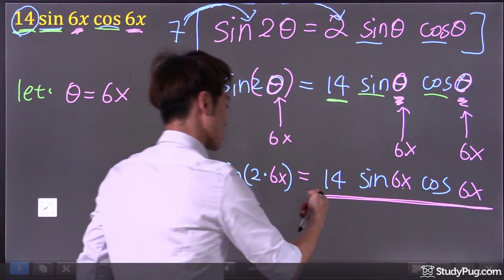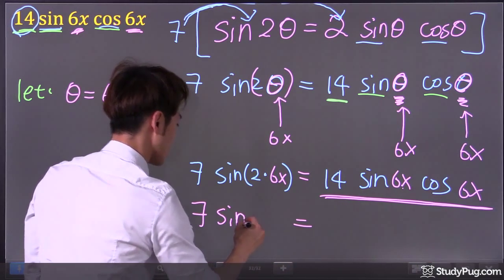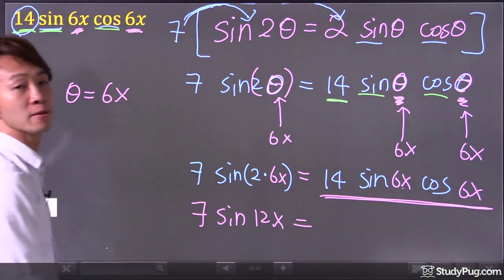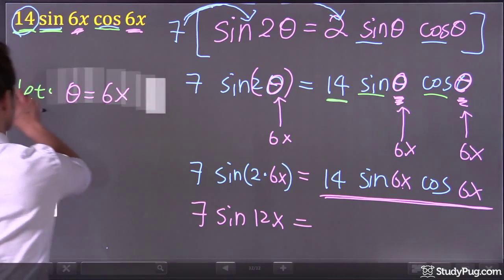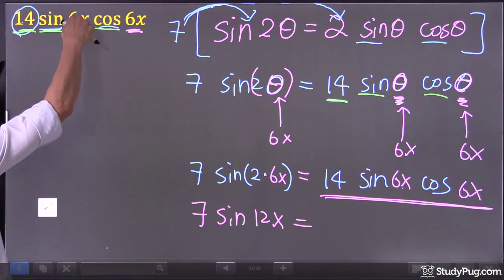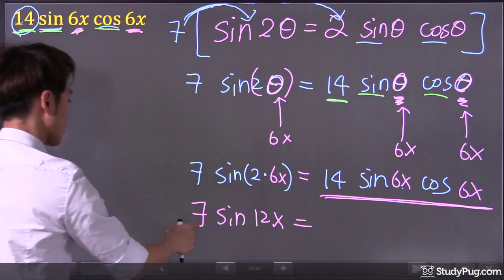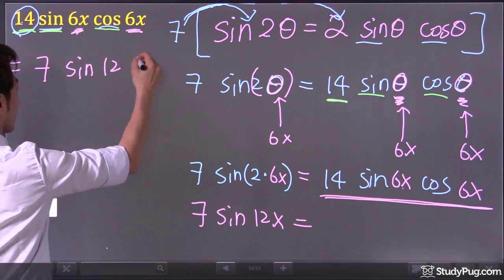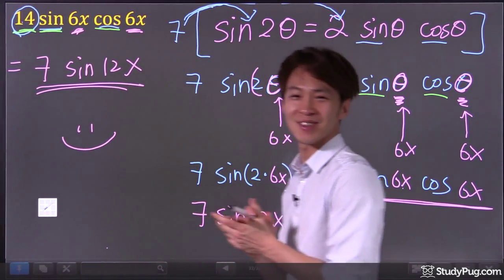Guess what? So this thing actually equals what? Equals 7 sine, because 2 times 6x, we get 12x. That's it. Done. How cool is that? So at the end, we know that 14 sine 6x cosine 6x equals 7 sine 12x. How cool is that? Good. That's it.